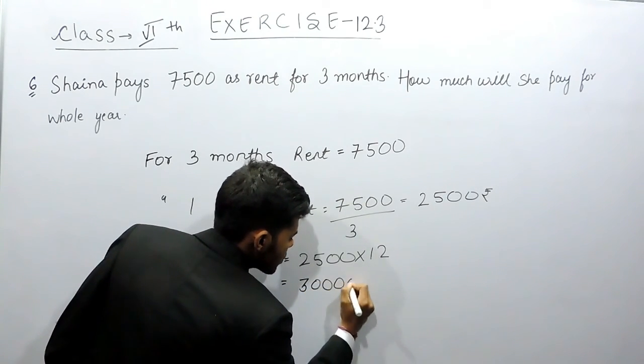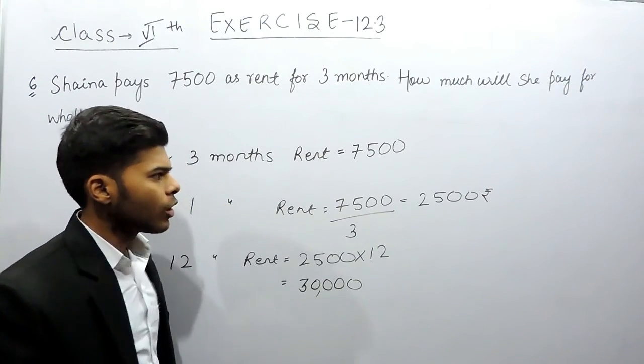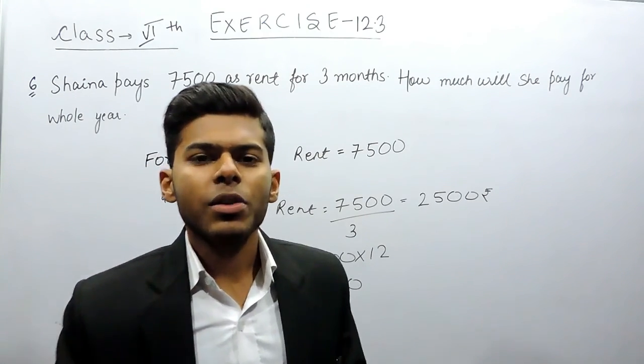and these two zeros. So this will be equals to 30000 rupees. This is how you can solve this question. Thank you.